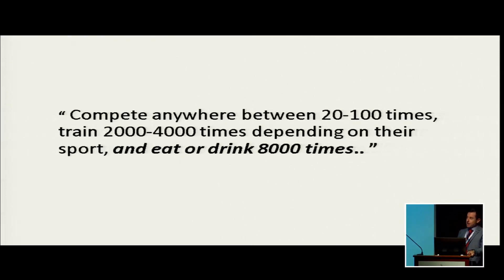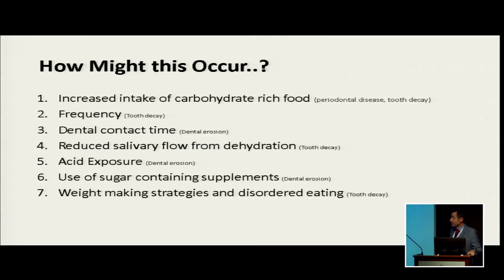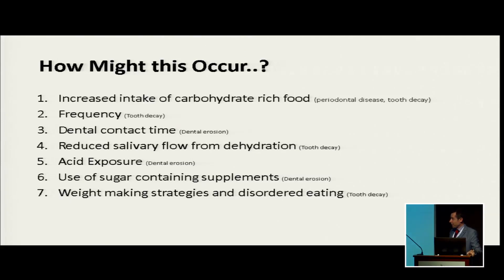When we start to think about a mechanism as to how this occurs, a traditional elite athlete is doing something to do with their mouth - eating or drinking-wise - 8,000 times a year. So when we start to think about the actual mechanisms, it's no surprise that if you're using something more than the general population, your possibility of something going wrong is going to be increased. When people sweat and train for long periods of time, they get dehydrated, which can affect the salivary flow, which we know can affect oral health.